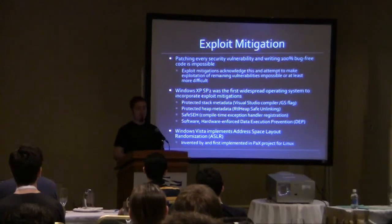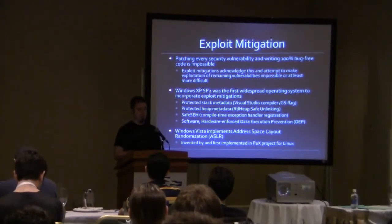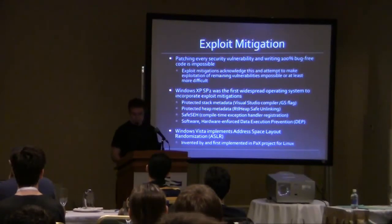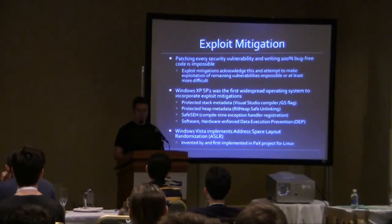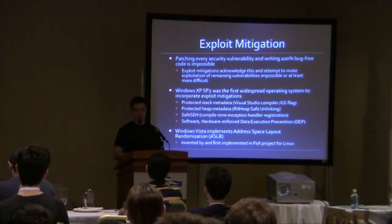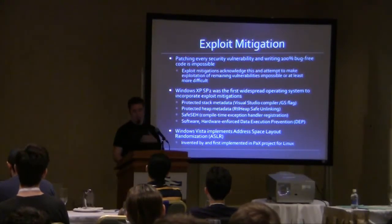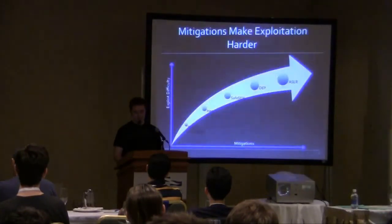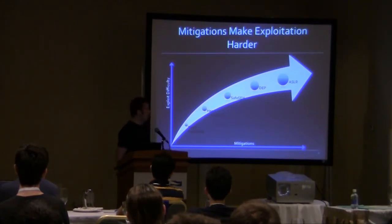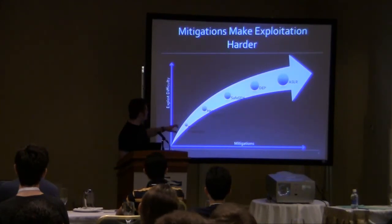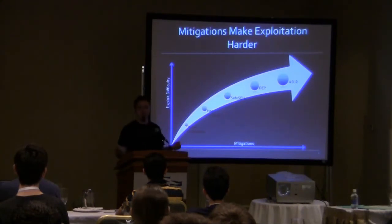Some of the better approaches to this are exploit mitigations: acknowledging we won't find all the vulnerabilities, so let's make it difficult for the exploit developer to get a meaningful exploit — because vulnerabilities don't own people, exploits own people. If you can stop the exploits, you're making progress. Starting with XP Service Pack 2, mainstream operating systems started shipping with exploit mitigations, including protected stack, protected heap, SafeSEH, and both software and hardware enforced data execution prevention. The biggest step forward was the introduction of ASLR with Vista — credit where it's due, it was invented and first implemented in the PaX project for Linux. As you keep adding mitigations, the time to take a vulnerability to a reliable exploit grows, and the number of vulnerabilities that can be turned into reliable exploits shrinks.